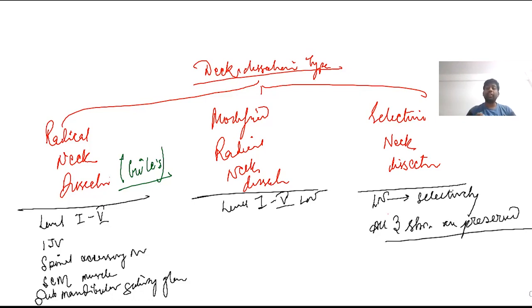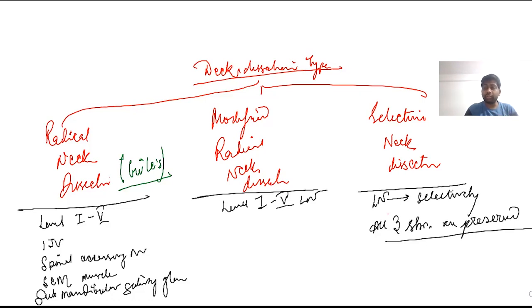Let us understand what modified radical neck dissection means in more detail. In MRND, we remove level 1 to level 5 lymph nodes completely as in radical neck dissection. The only difference is we don't remove all three structures — the spinal accessory nerve, sternocleidomastoid, and internal jugular vein — together. We preserve one, two, or all three, giving us MRND type 1, type 2, and type 3.